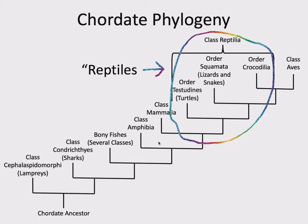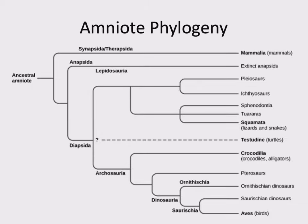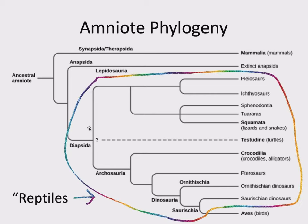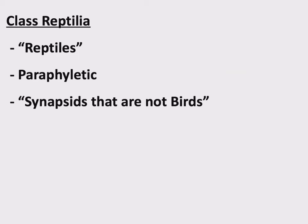This phylogenetic tree shows just amniotes. Ancestral amniote on the left, and you can see the three clades: Synapsida, Anapsida, and Diapsida. Synapsids lead to mammals, anapsids are all extinct, and diapsids give us reptiles and birds. To illustrate the paraphyletic nature of reptiles: within the clade Diapsida, you have to exclude birds to define what a reptile is. Class Reptilia is a paraphyletic group — diapsids that are not birds.